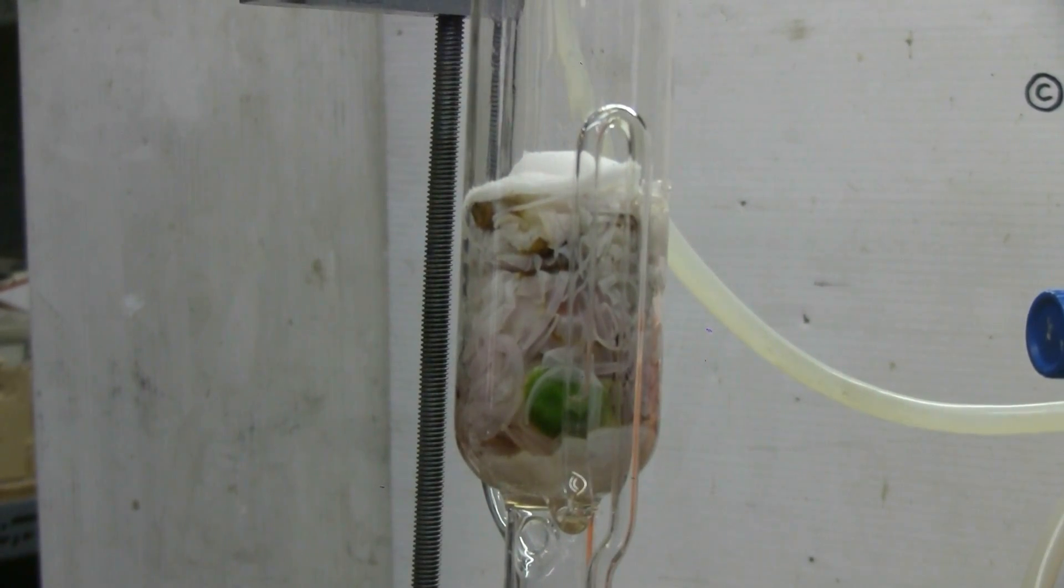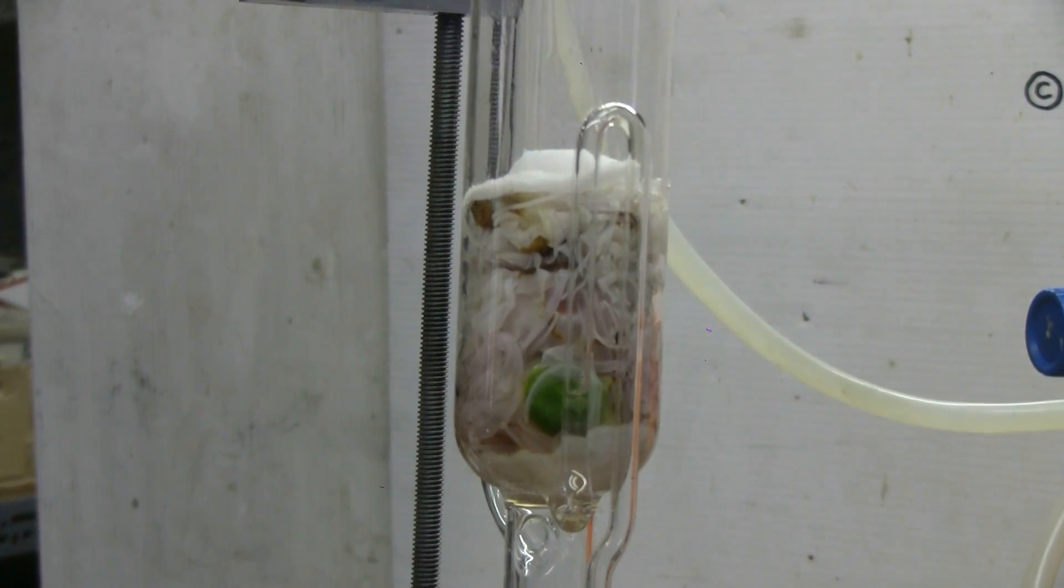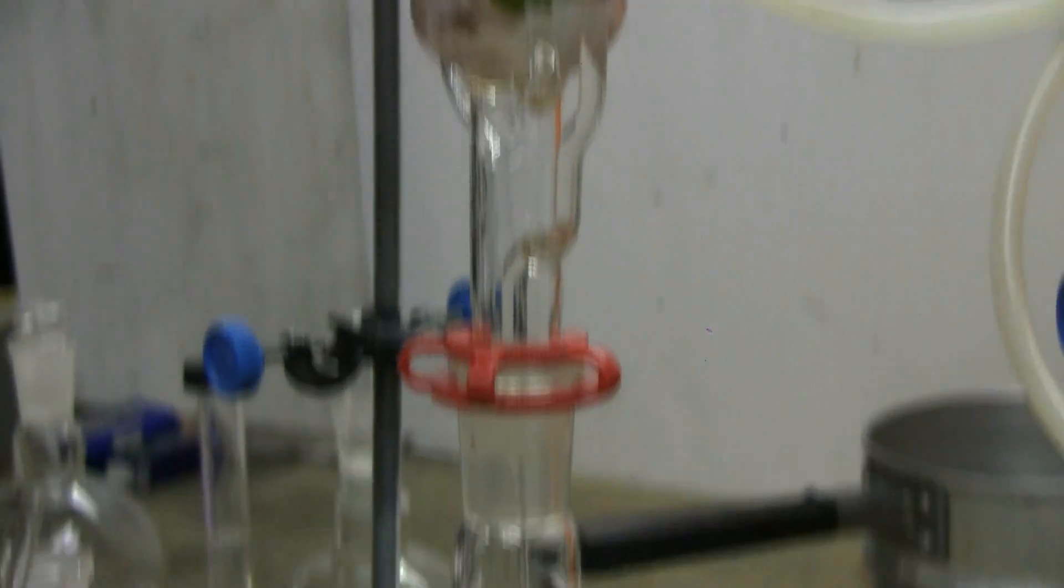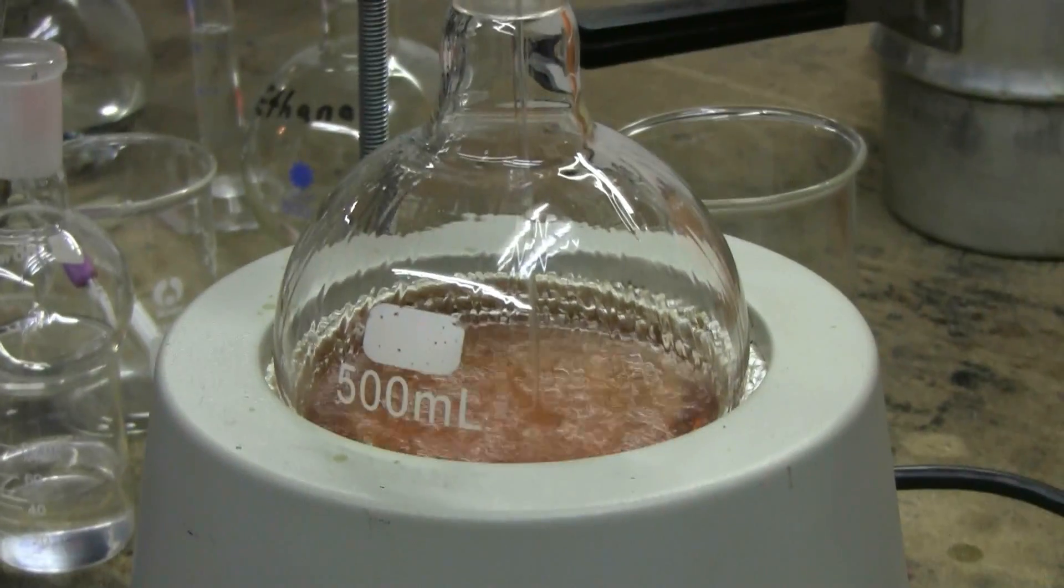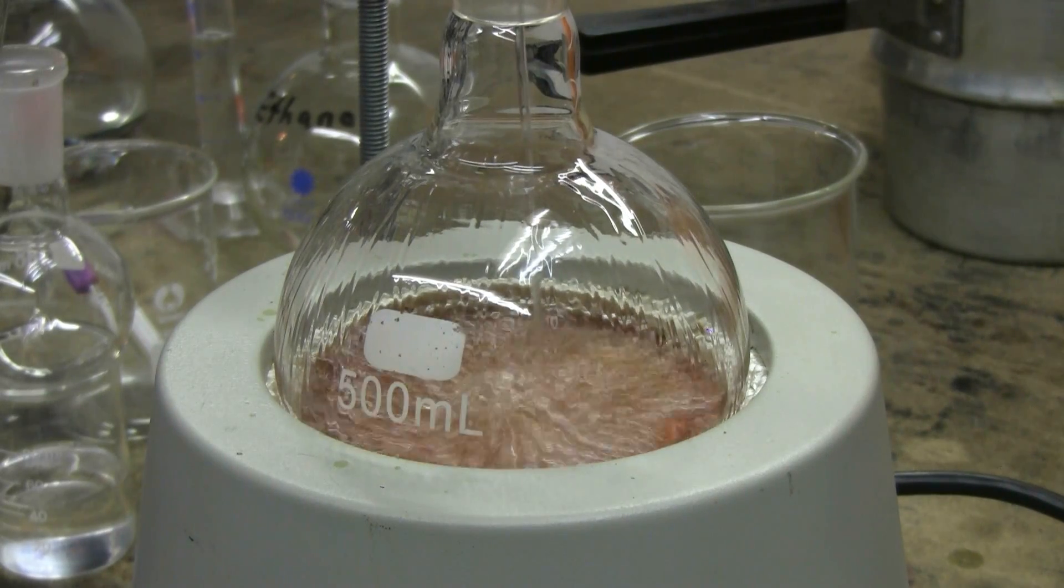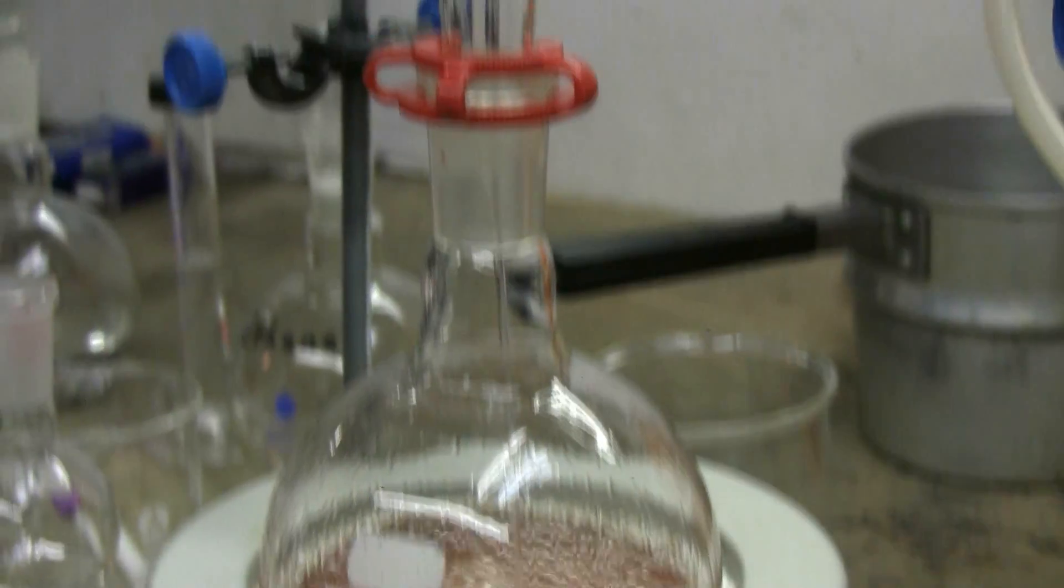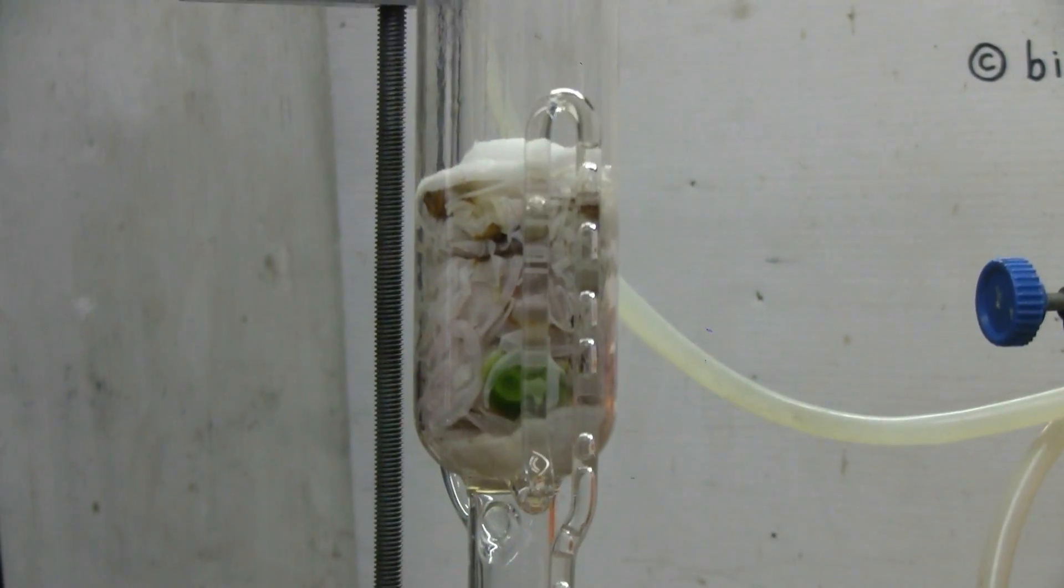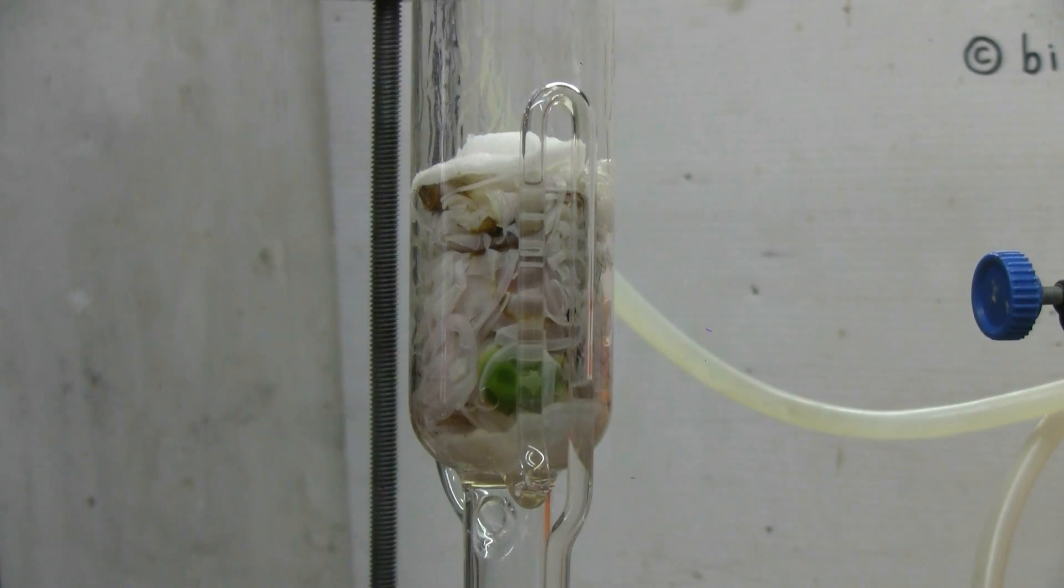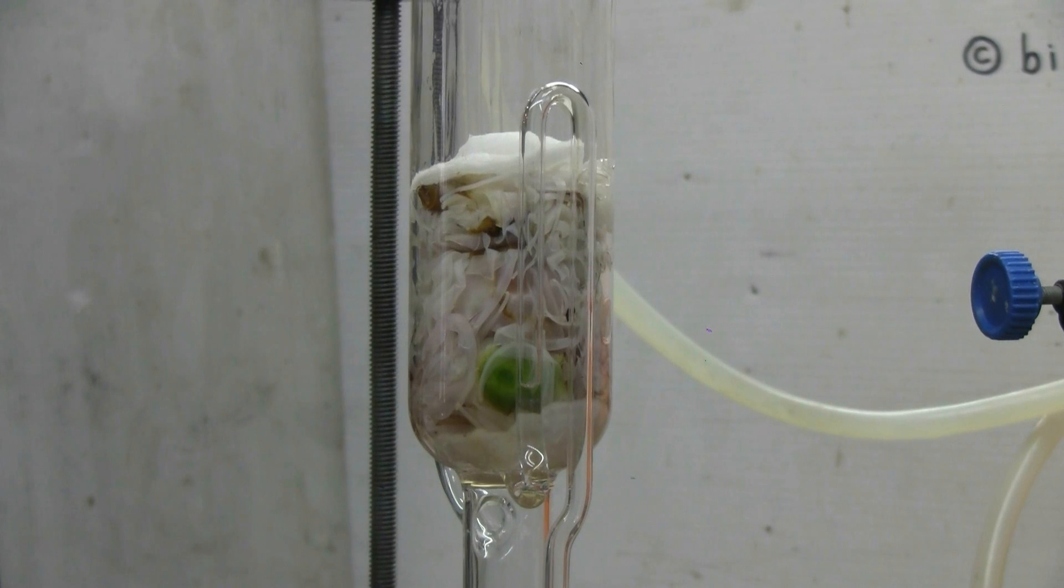Cycle number three will now begin. Here goes the third cycle. Nice rosy color of extraction in the boiling flask. Third cycle is completed. I'm going to do ten cycles, so I'll pick up the video again when we reach the last cycle, number ten.